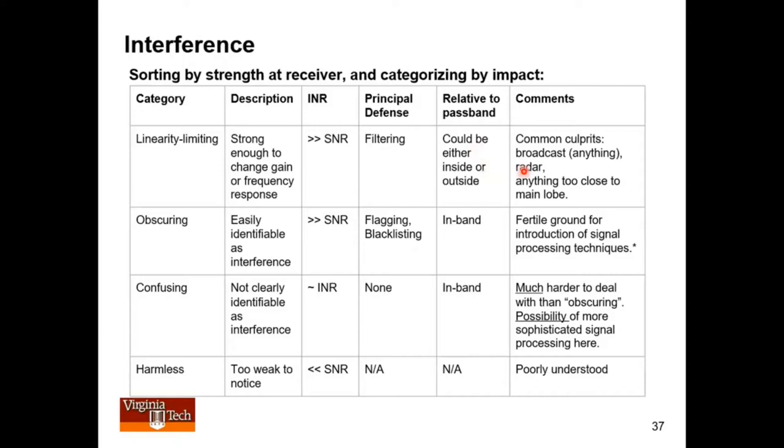You can have linearity problems by anything that's too close to the main lobe. So you can have a linearity problem simply because a satellite walked across the main lobe or a strong side lobe. And that could temporarily, for example, drive the receiver into compression. That happens quite often. Astronomers sometimes realize it's happening and oftentimes don't. They just realize something's gone wrong with the measurement.